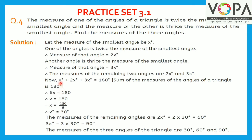Now, x plus 2x plus 3x equals 180 degrees, because the sum of the measures of the angles of a triangle is 180 degrees. Adding them, 6x equals 180 degrees. Therefore, x equals 180 divided by 6, that is x equals 30 degrees.